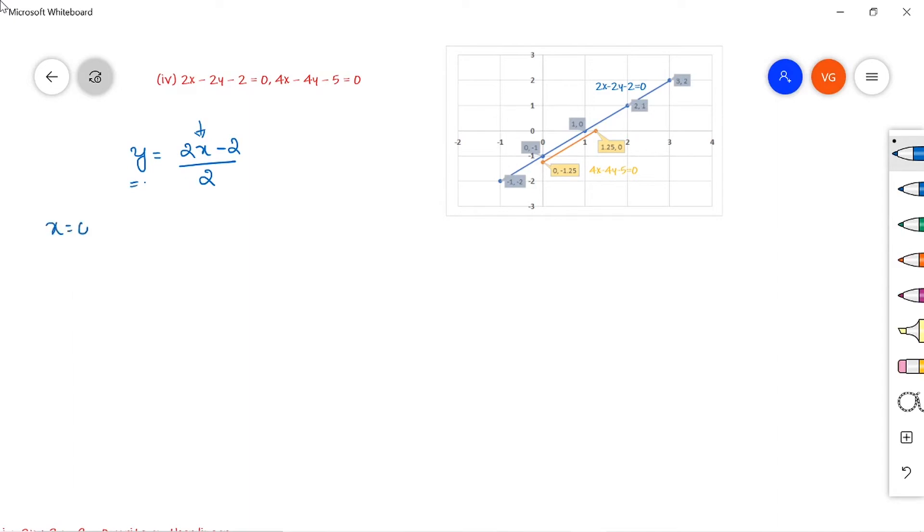Suppose x equals 0, you will get y equals minus 2 by 2, which is minus 1. Take x equals minus 1, then y value will be minus 4 divided by 2, which is minus 2. Take x equals plus 1, then 2 minus 2 is 0, so y equals 0.